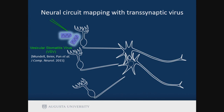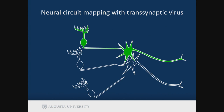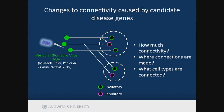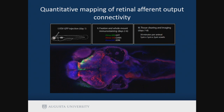We recently discovered that the transsynaptic virus, specifically the vesicular stomatitis virus, known as VSV, could infect zebrafish neurons retrogradely and label connecting neurons effectively. This gives direct visualization of how much connectivity there is, where connections are made, and what cell types are connected, potentially paving the way for rapid brain mapping. By combining the transsynaptic virus with zebrafish, we can further reveal connectivity changes caused by candidate disease genes.